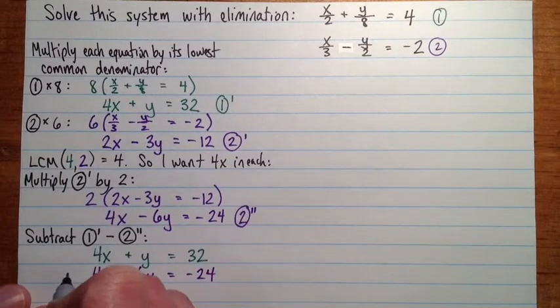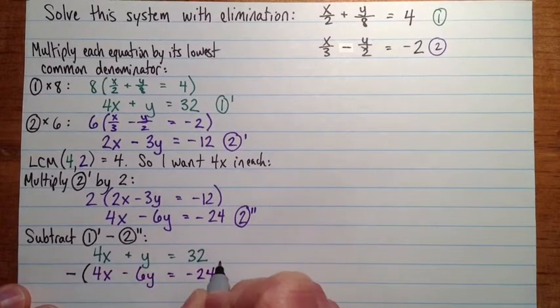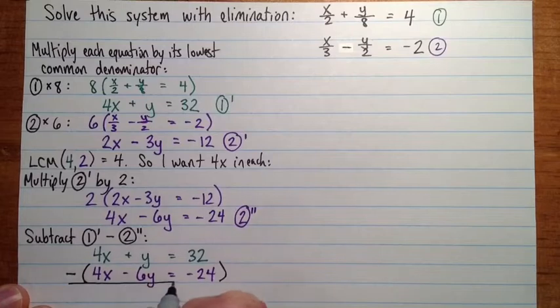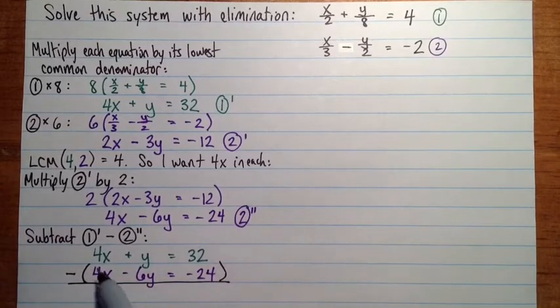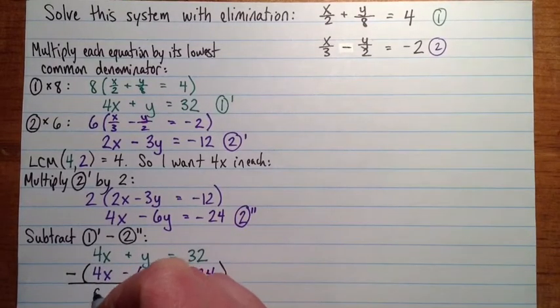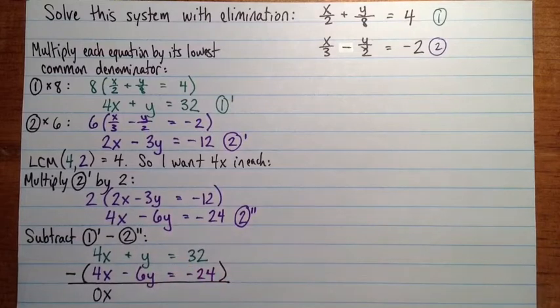So as always, big subtraction sign, and then put all that in brackets. So 4x minus 4x is 0x. That's what we're hoping for. If you don't get that, then stop and go try to figure out what went wrong.